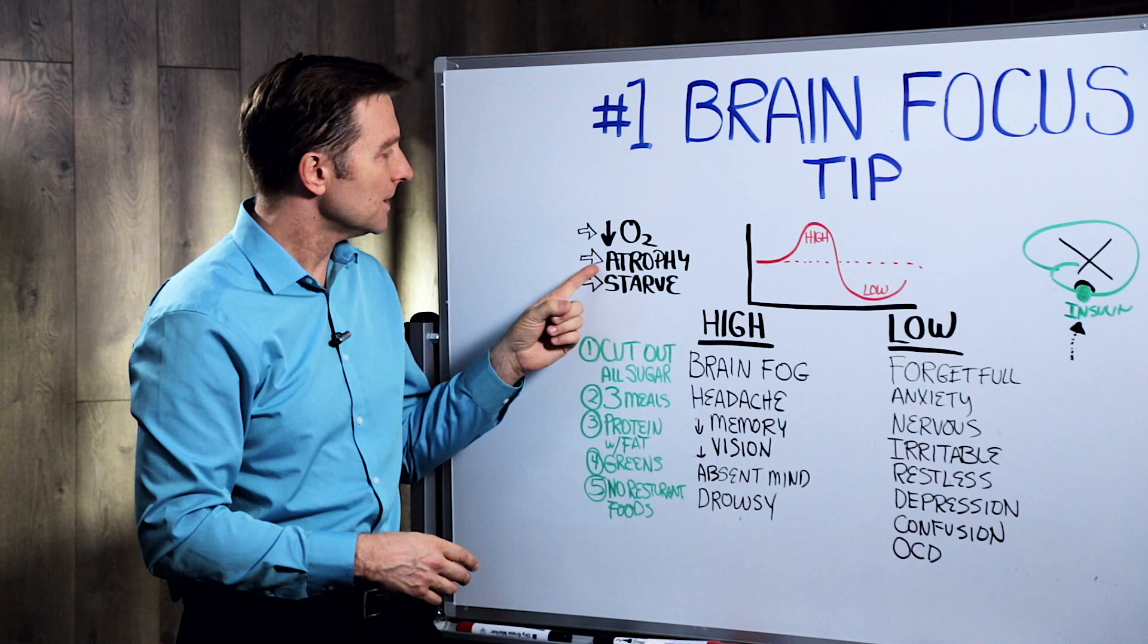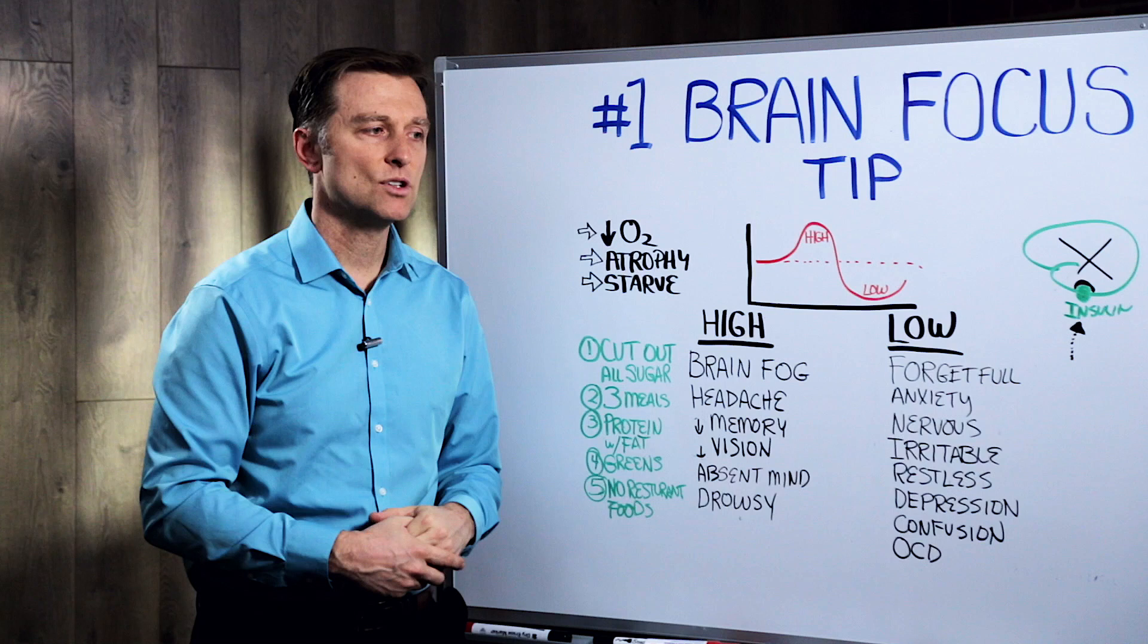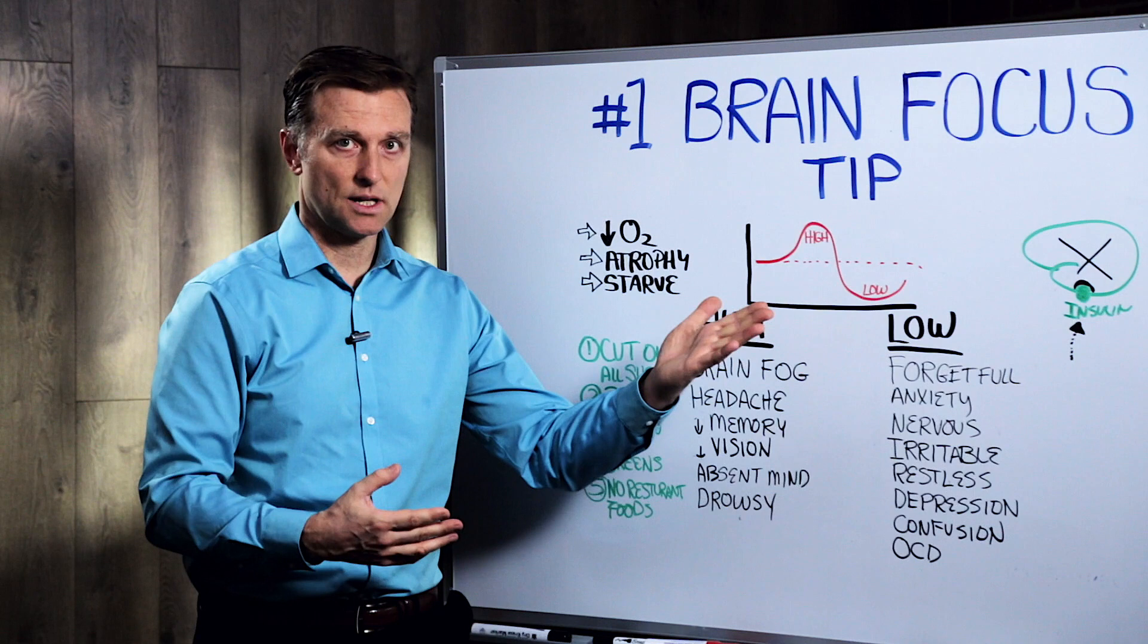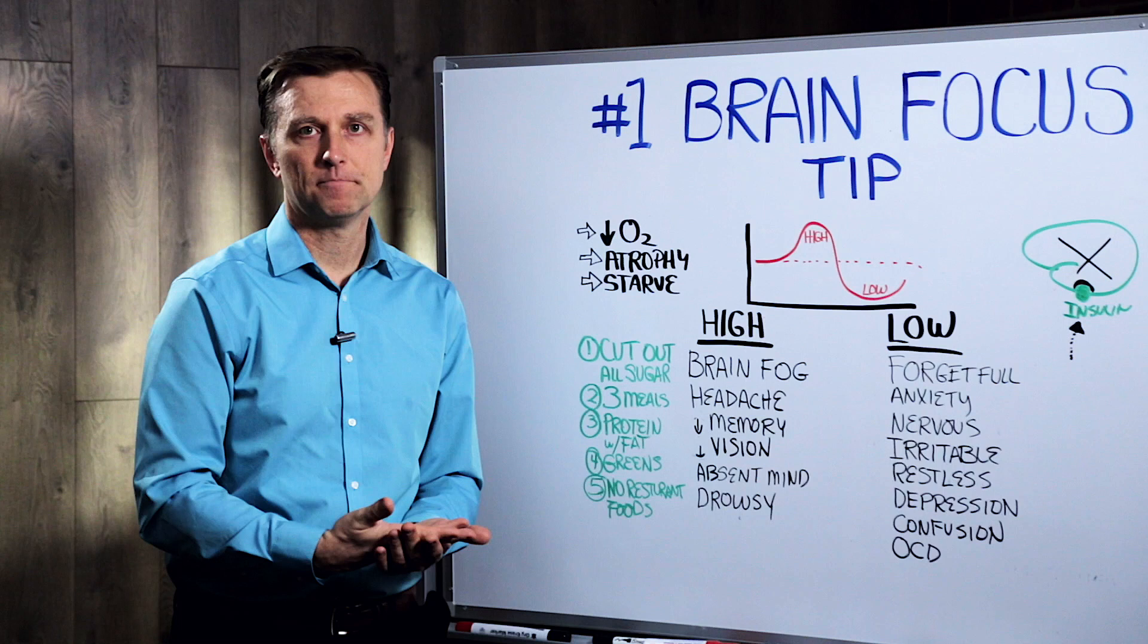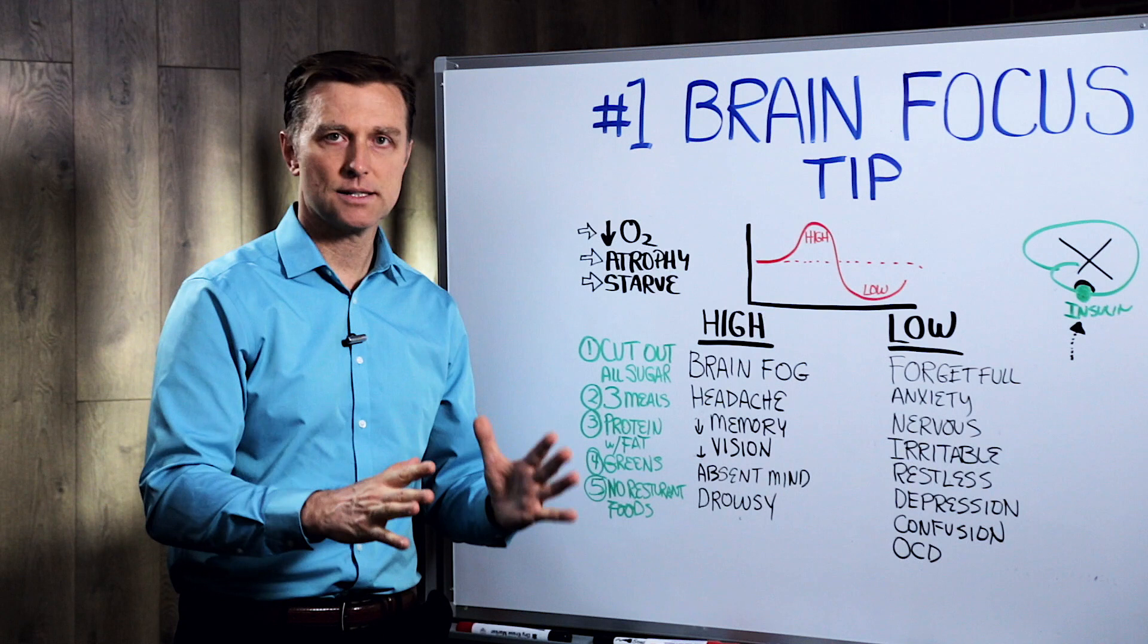Now, here we go. Atrophy and then starvation. So basically sugar starves your brain of fuel over time because you'll develop a condition called insulin resistance. So that is what's going on. So what we want to do is you must do several things right off the bat. You got to cut out the sugar. You have to stop eating sugar. Anything sweet, you have to cut it out, including honey and agave nectar and all that stuff. That's number one.